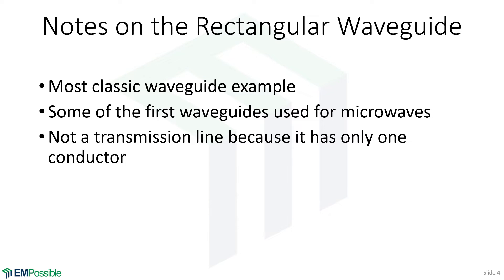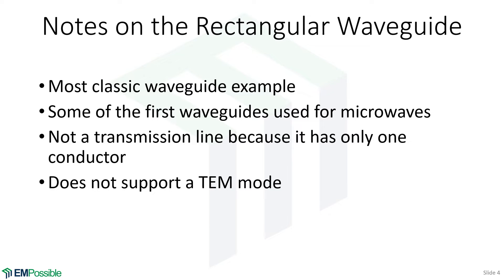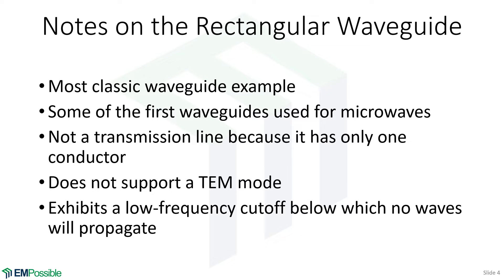The rectangular metal wave guide is not a transmission line because it has only one conductor. Don't mistake its four sides as being multiple conductors — it's all one conductor. It does not support a TEM mode, and it usually has a homogeneous fill. A transmission line requires two or more conductors to support TEM. Additionally, all modes in the rectangular wave guide exhibit cutoff frequencies, whereas the fundamental mode of a transmission line goes all the way down to DC.